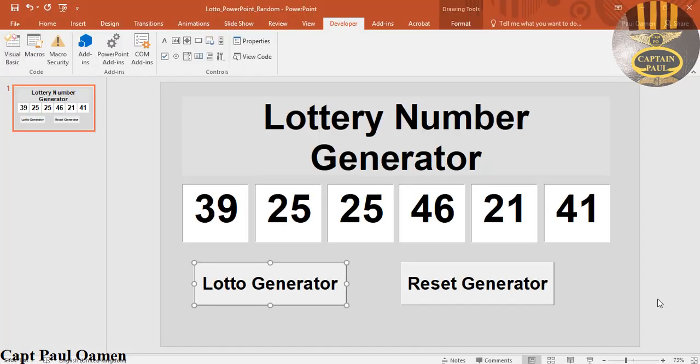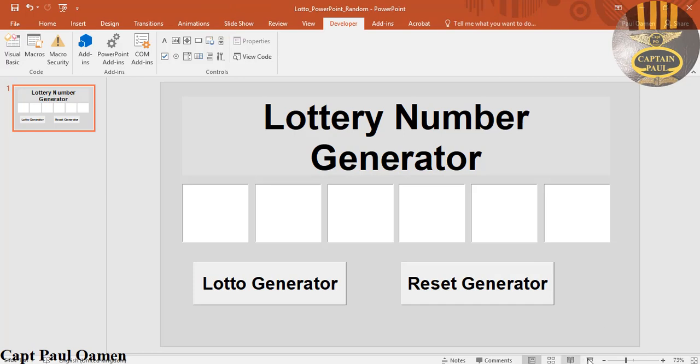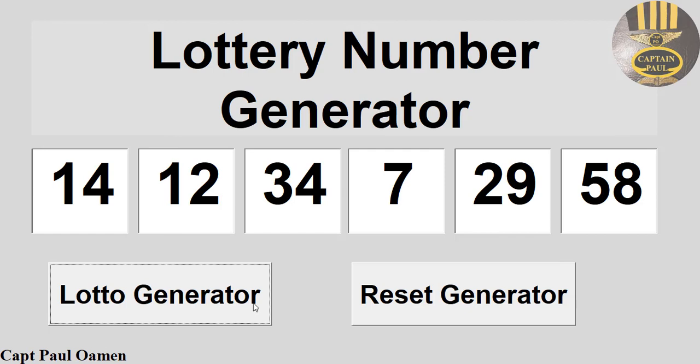Let's run it one more time — click the slideshow, click Reset, go back in, run the program, click Generate — there we go. That's how you create your own lottery number generator using just a PowerPoint presentation slide. I hope you guys enjoyed it — please subscribe to my second channel, known as Paul Woman. Have a nice day, bye for now!